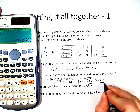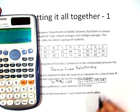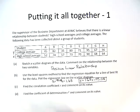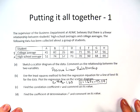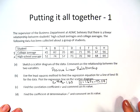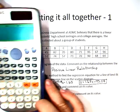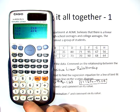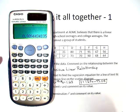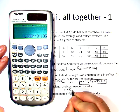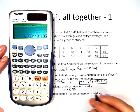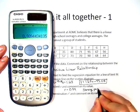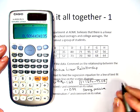This is our line of best fit, also known as our line of regression. Now it says find the correlation coefficient r and comment on its value. Well, we just hit AC, so all we have to do now is shift 1, regression, and choose r. And we find that r is 0.94. In other words, this is a strong positive correlation.